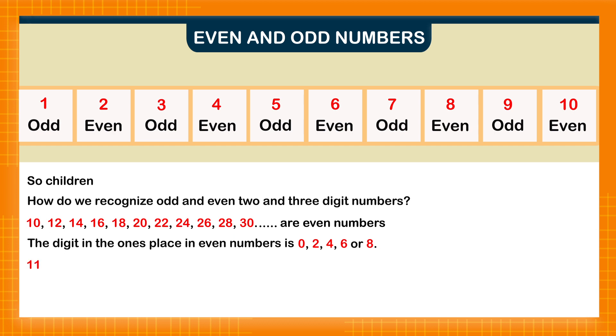Here, 11, 13, 15, 17, 19, 21, 23, 25, 27, 29 are odd numbers. The digit in the ones place in odd numbers is 1, 3, 5, 7, or 9.